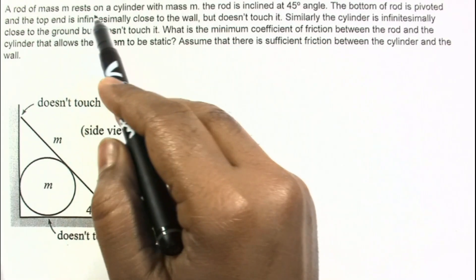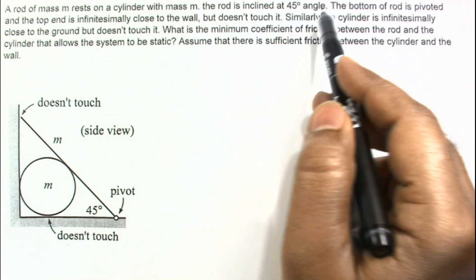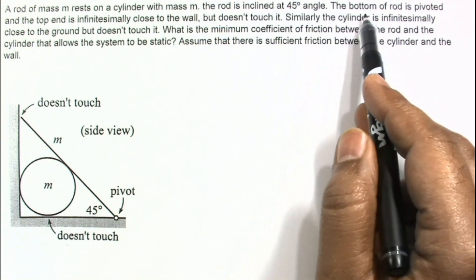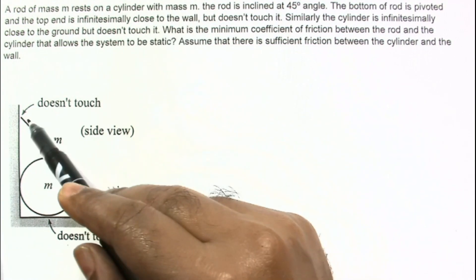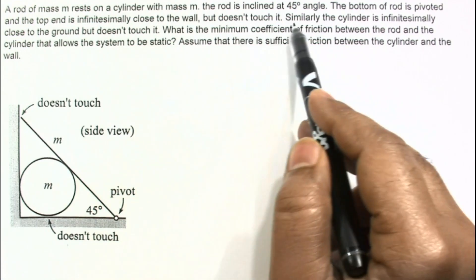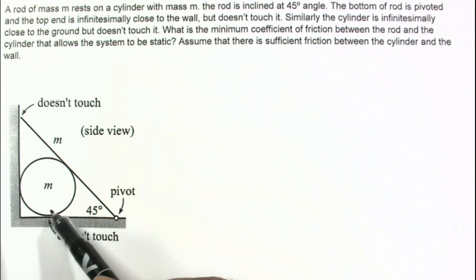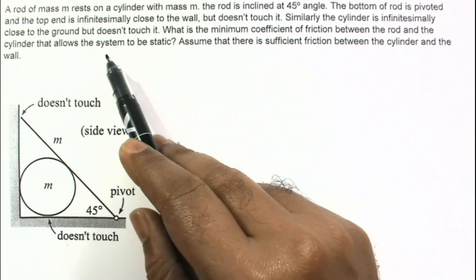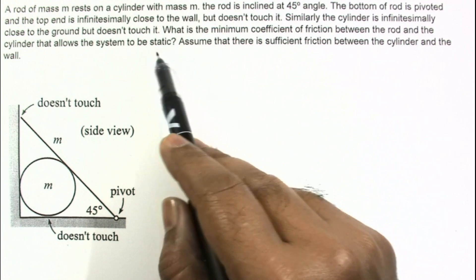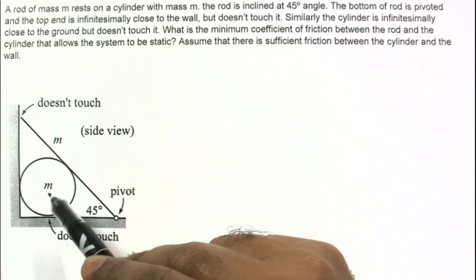In the problem, a rod of mass M rests on a cylinder with mass M. The rod is inclined at a 45 degree angle. The bottom of the rod is pivoted and the top end is infinitesimally close to the wall, so it is not touching the wall. Similarly, the cylinder is infinitesimally close to the ground but does not touch it. We need to find the minimum coefficient of friction between the rod and the cylinder that allows the system to be static — meaning net force and net torque on the rod and cylinder must be zero.